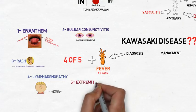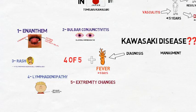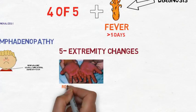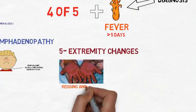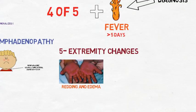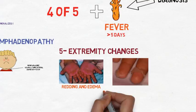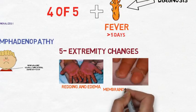Fifth is extremity changes. Initially, we have redness and edema of the palms and soles. After a few weeks, these change into desquamation of the fingers and toes.